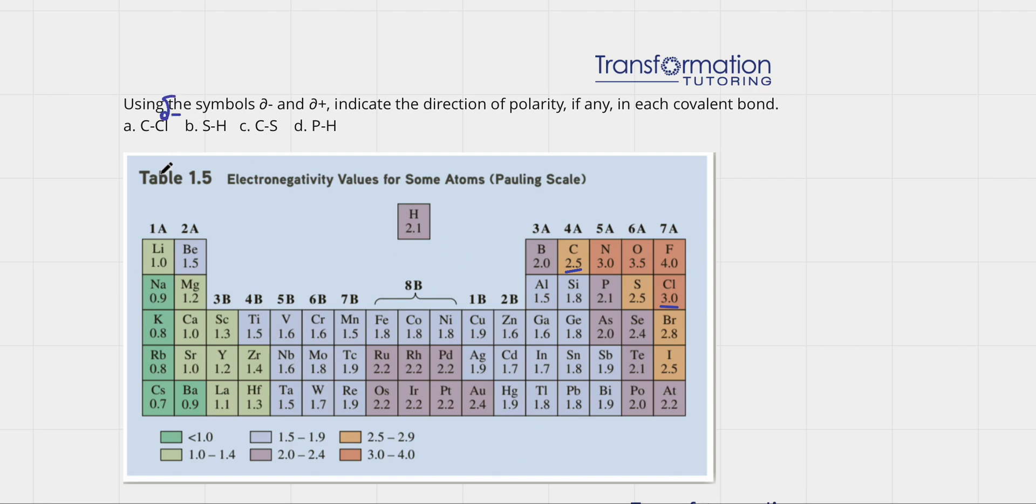Now let's look at S and H. Hydrogen, where is it, right here, 2.1, and sulfur 2.5. Who has a bigger electronegativity? Sulfur. Sulfur is more electronegative, so it will have a partially negative charge and hydrogen must be partially positive.